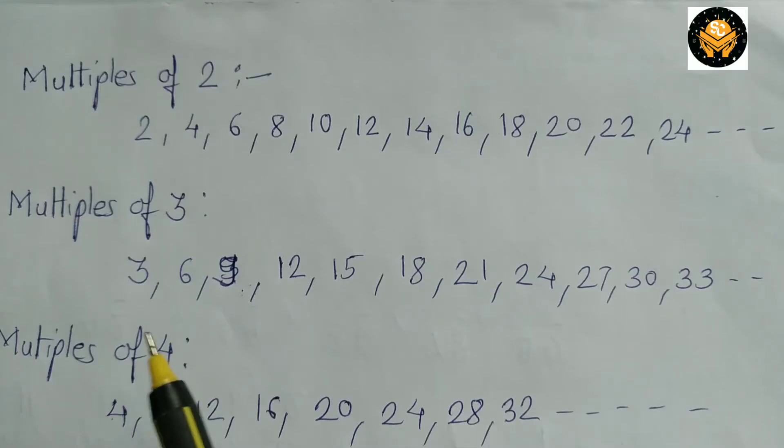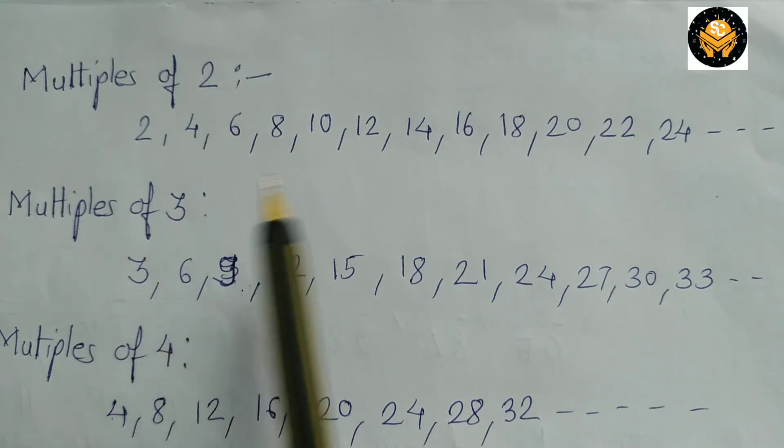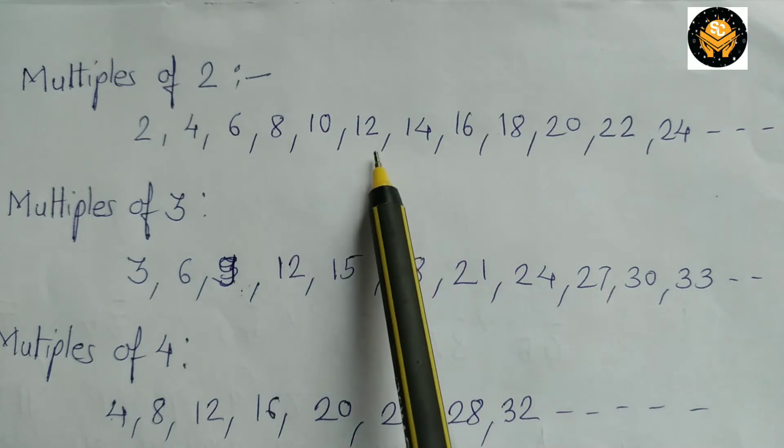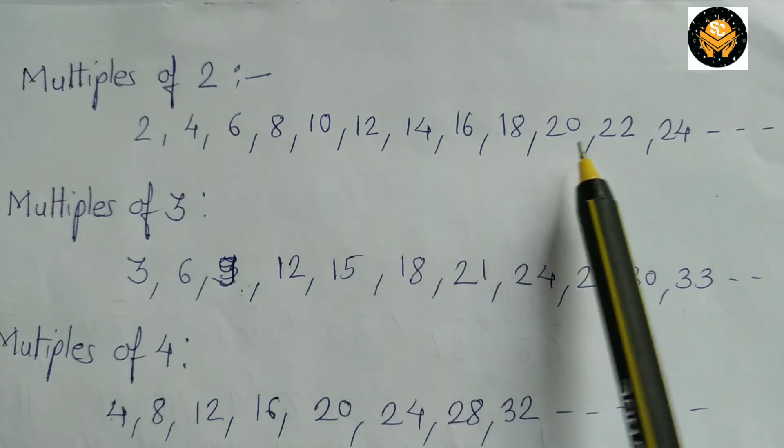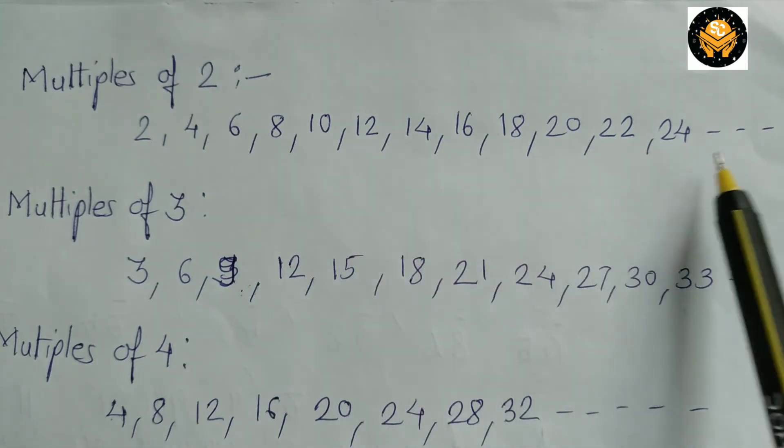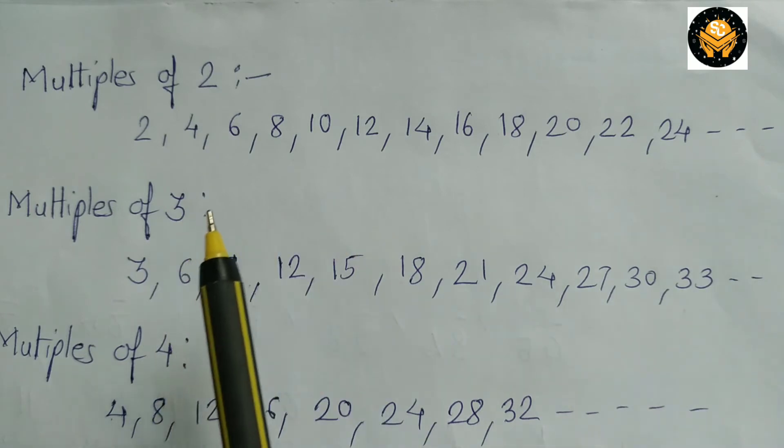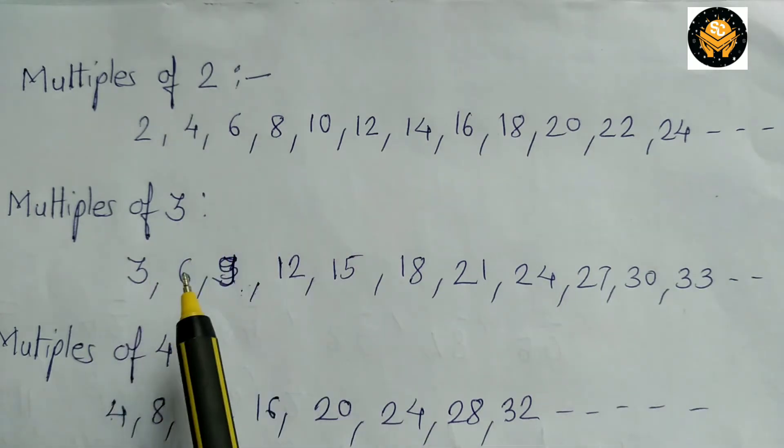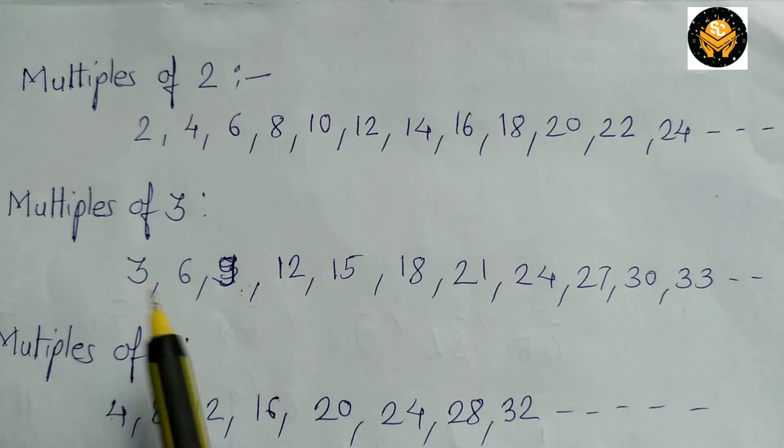The number in the 2 times tables are the multiples of 2. Now here 2, 4, 6, 8, 10, 12, 14, 16, 18, 20, 22, 24 and so on are the multiples of 2. Similarly the numbers in the 3 times table are the multiples of 3.